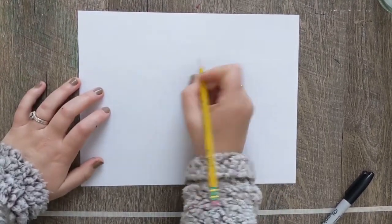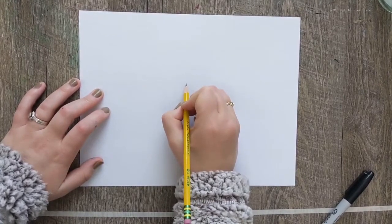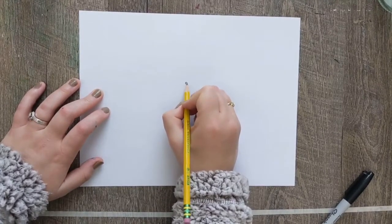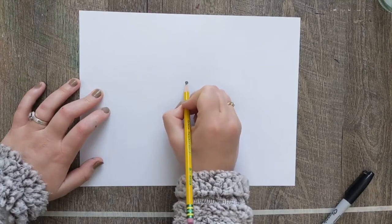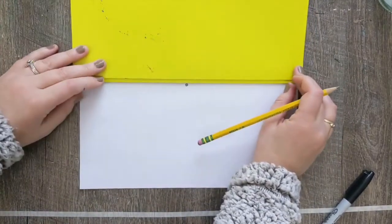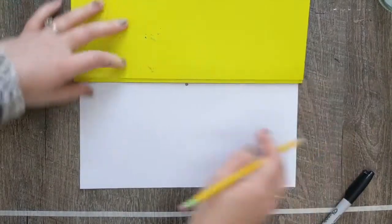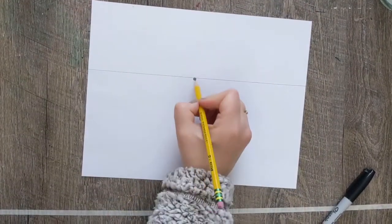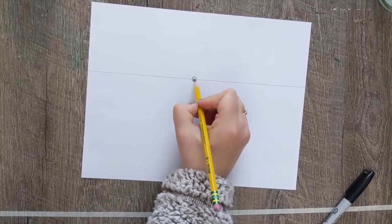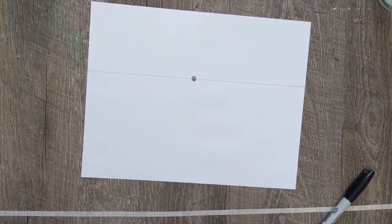So to start off with, the very first thing we need on our paper is called a vanishing point. All you're going to do is make a dot on your paper anywhere, somewhere around the middle. So, this is the point where objects start to vanish into the background. Then what you're going to do is you are going to take some straight edge surface and you are going to draw a line straight across. This is going to be your horizon line, where the earth and the sky meet. And your vanishing point needs to be right on the horizon line.